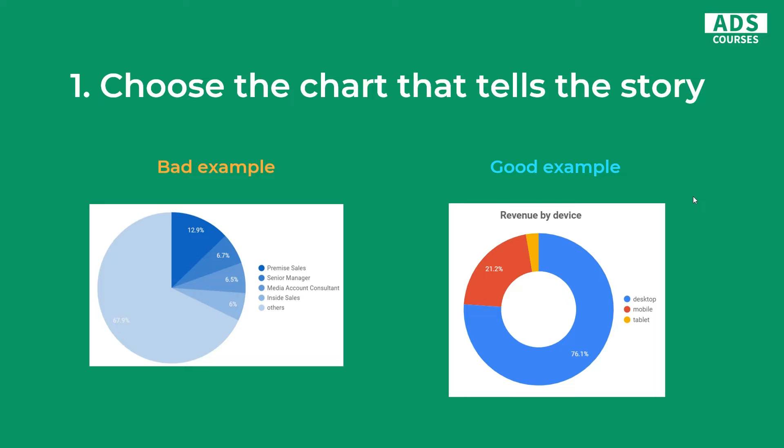Choosing the right chart type or styling the chart properly will give you the ability to actually tell a story, because the story needs to be easy to read. In the bad example on the left, we have this pie chart where almost 78% of the chart is 'others.' We don't know what 'other' is — it's actually most of the chart. So telling a story from this chart is very difficult.